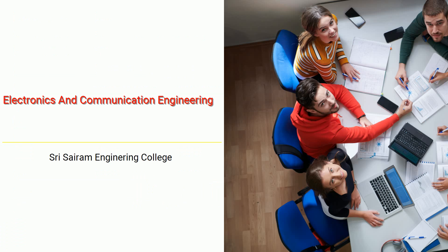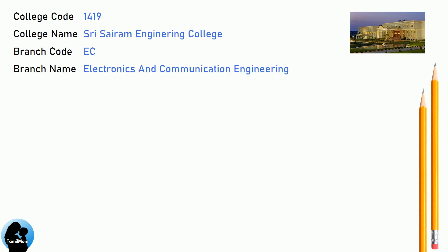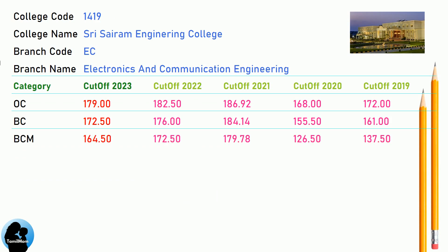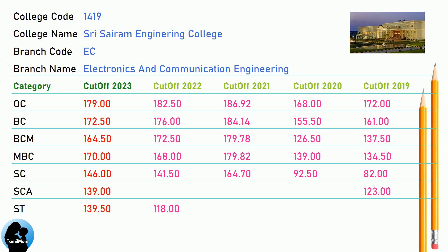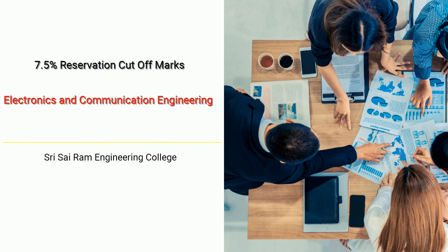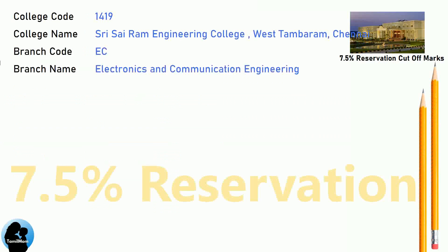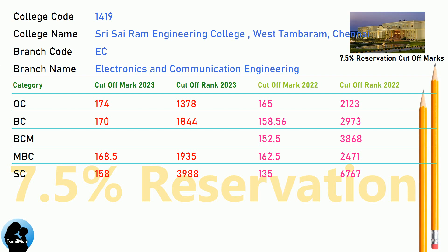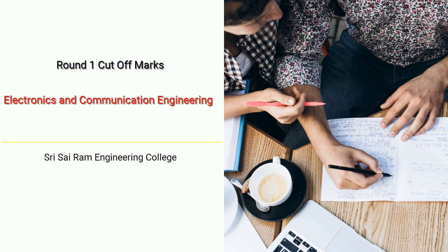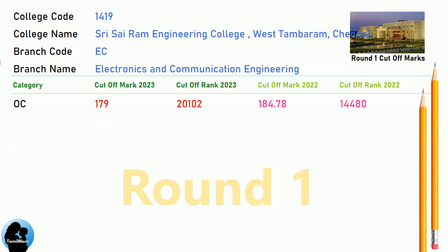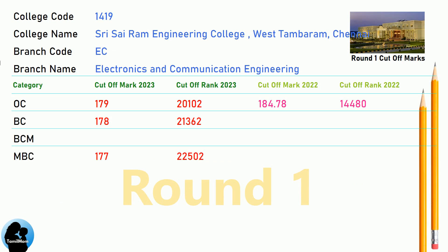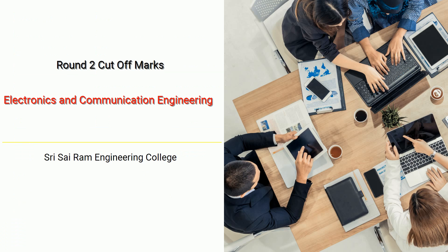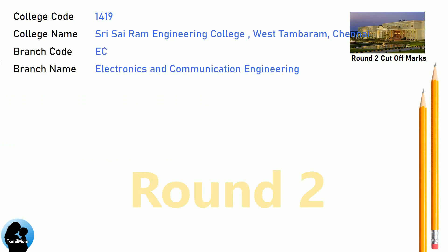DNA Cut-off for Shri Sai Ram Engineering College in Electronics and Communication Engineering. DNA 7.5 Reservation Cut-off for Shri Sai Ram Engineering College in Electronics and Communication Engineering. DNA Round 1 Cut-off for Shri Sai Ram Engineering College in Electronics and Communication Engineering. DNA Round 2 Cut-off for Shri Sai Ram Engineering College in Electronics and Communication Engineering.